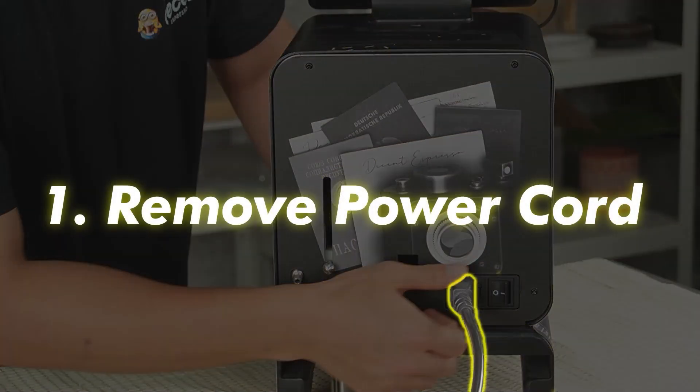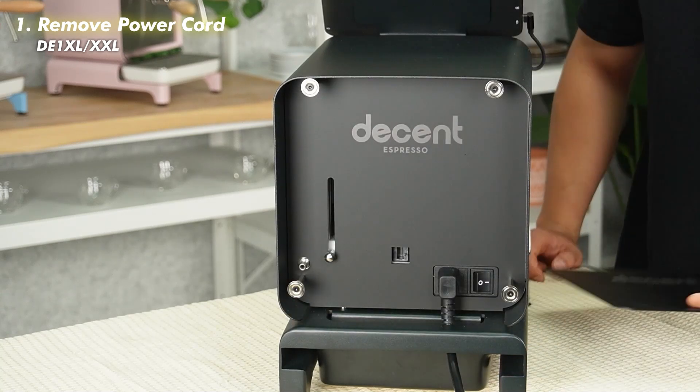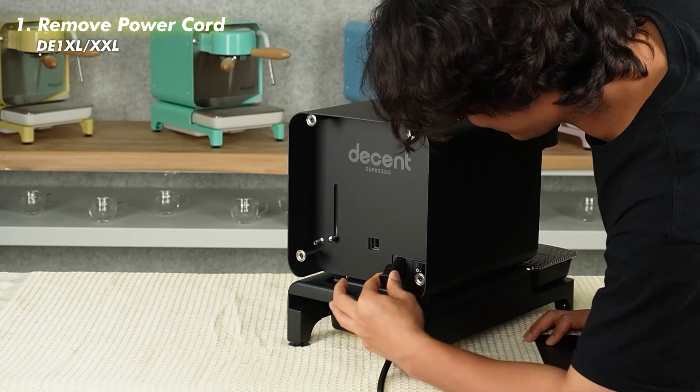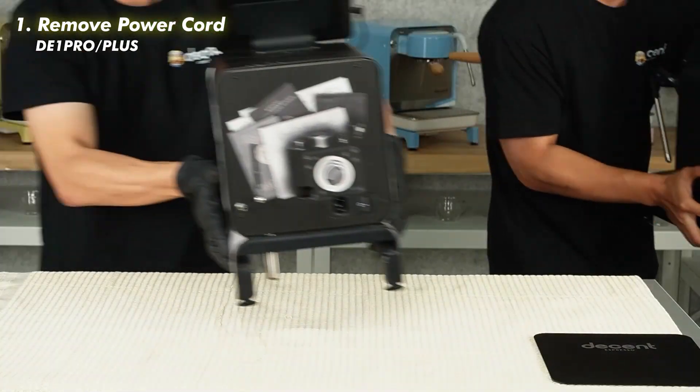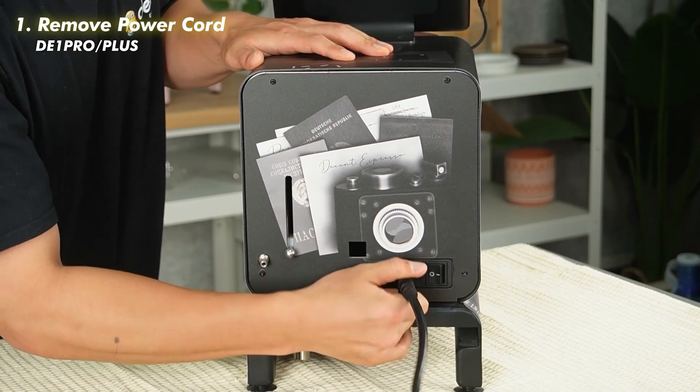First, we need to remove the power cord from the machine. For XL or XXL models, first remove the back panel and turn the machine's back switch off, then unplug the power cord. For Pro and Plus models, turn the machine's back switch off and unplug the power cord.